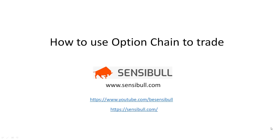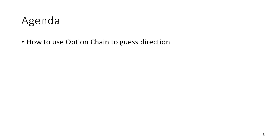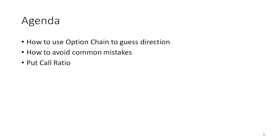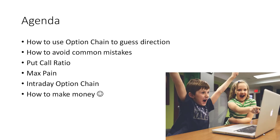Today's agenda: how to use option chain to guess direction — there are hidden clues on where the market will turn around, whether it will tank or bounce. We'll also cover how to avoid common beginner mistakes, put-call ratio, max pain, intraday option chain, change in OI and its relation to direction, and most importantly, how to make money using all this.